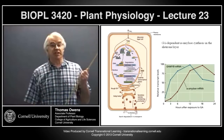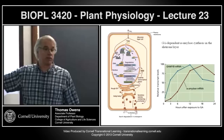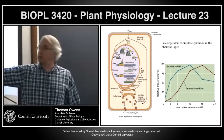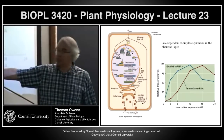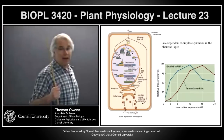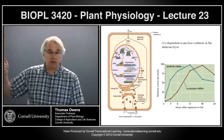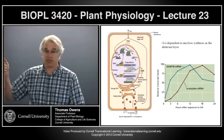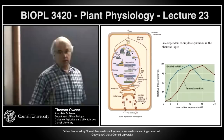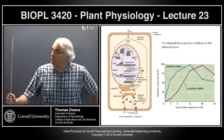The GA-MYB is the gibberellic acid-dependent MYB transcription factor. The early gene made in response to gibberellic acid is a transcription factor, which then has a different set of promoters. The GARE — gibberellic acid response element — is where the GA-MYB transcription factor binds and turns on the late genes, the secondary genes. One of the main secondary genes is alpha-amylase, the enzyme involved in breaking down starch in the endosperm.